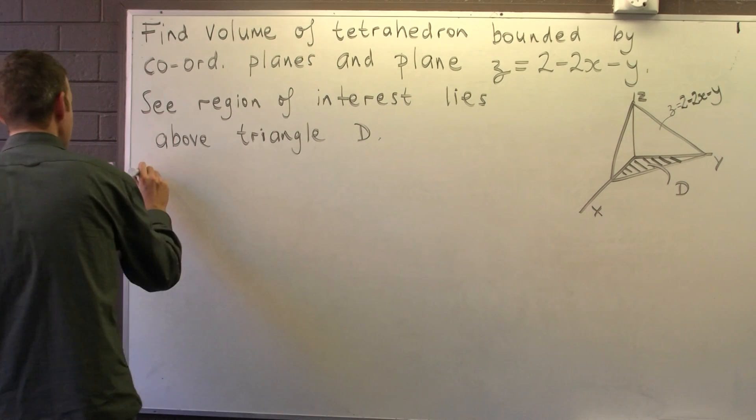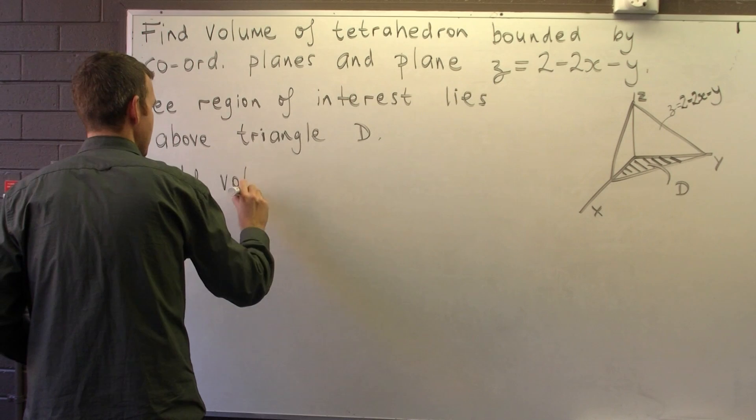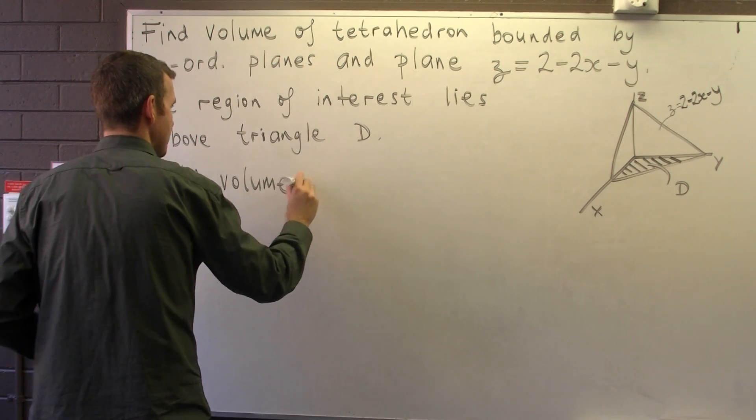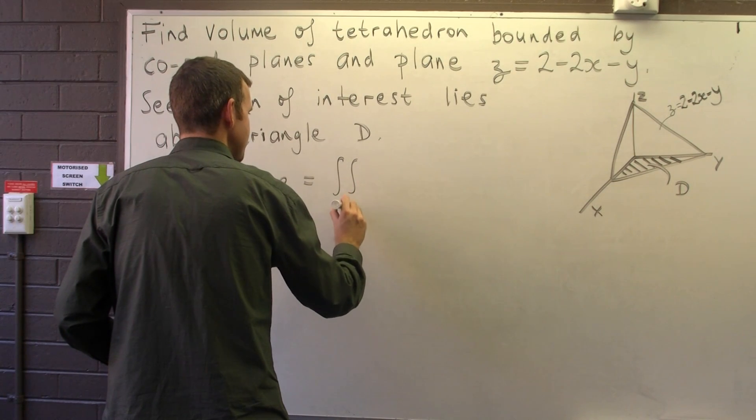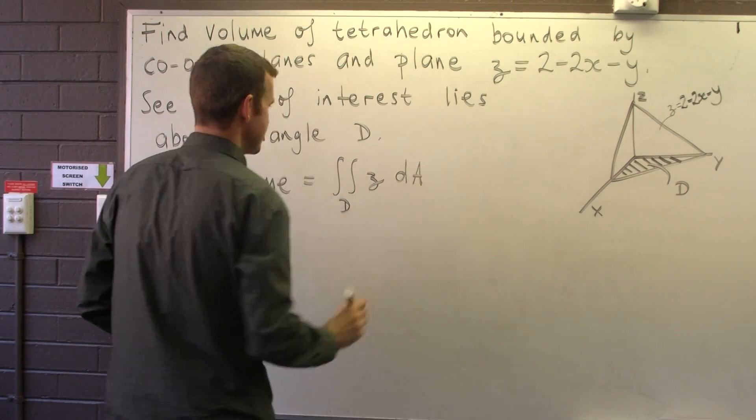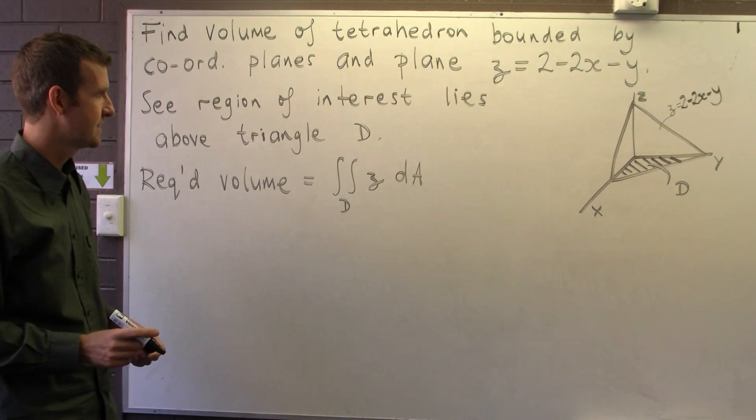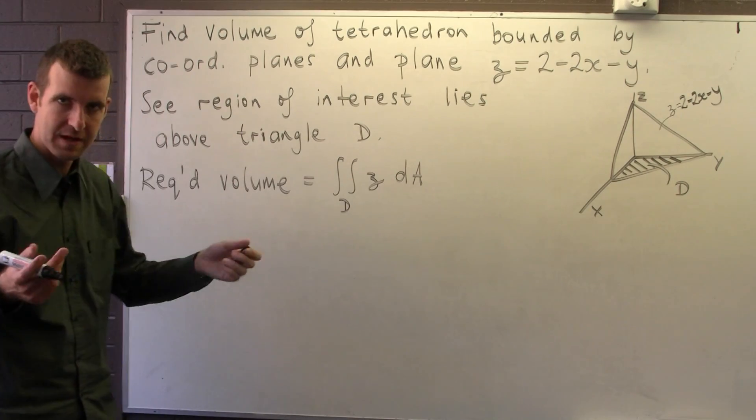So the required volume is just the double integral over D, Z dA. So to work this out we need to describe D a bit more precisely.